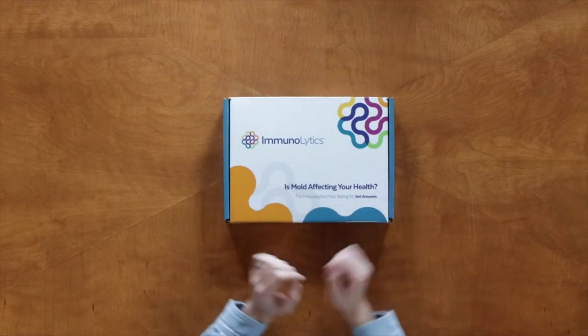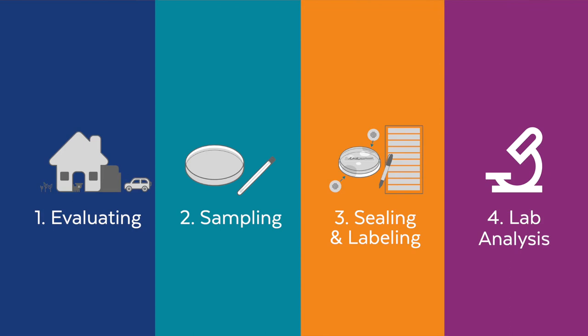There are four basic steps to using your test kit. First, evaluating what needs to be tested. Second, sampling your rooms, cars, pets, and surfaces. Third, sealing and labeling samples. And fourth, sending your samples for analysis.